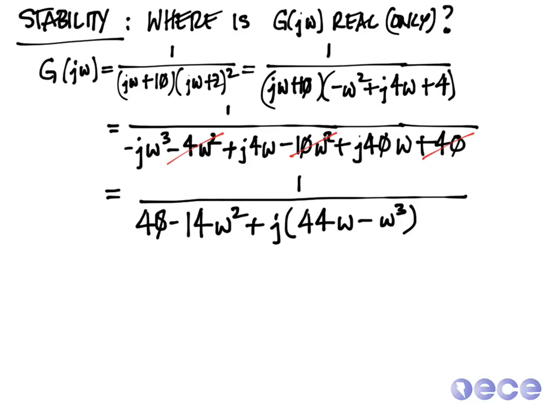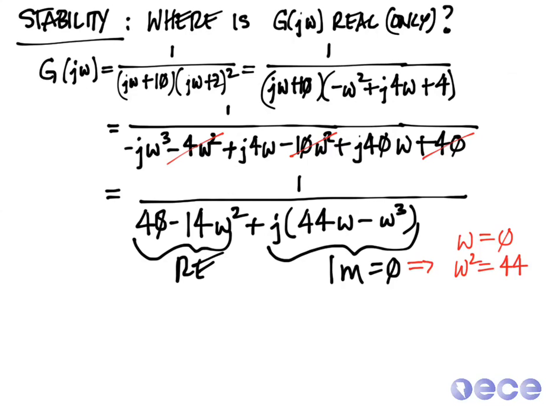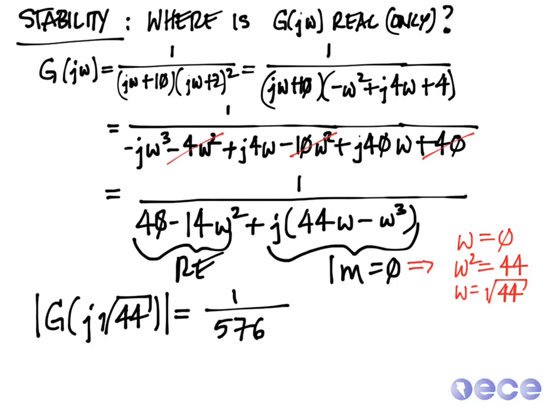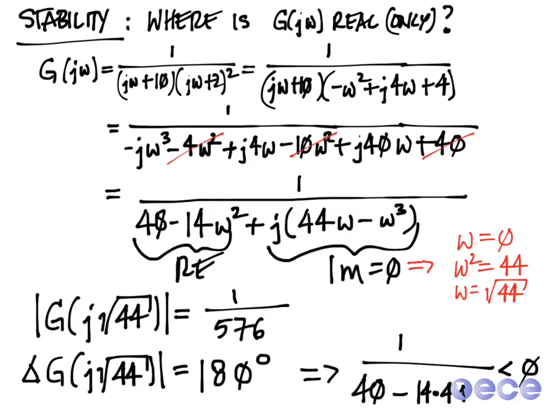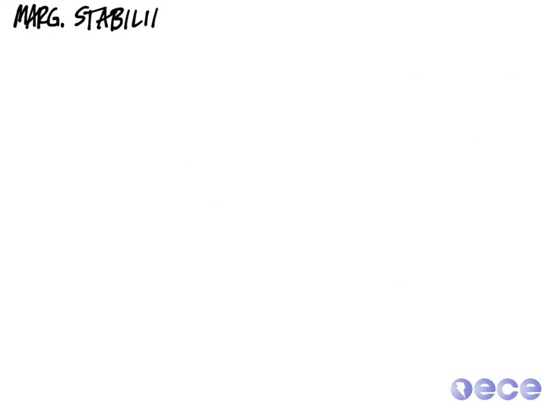We now have 1 over a real plus an imaginary. If we set the imaginary equal to 0, that can happen at omega equals 0 and at omega squared equals 44, or omega equals the square root of 44. The gain at j square root of 44 is 1 over 576. The angle at j square root of 44 is 180 degrees, because we have 1 over a negative number, so it's minus 180.